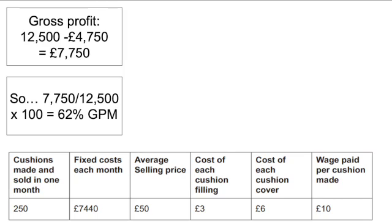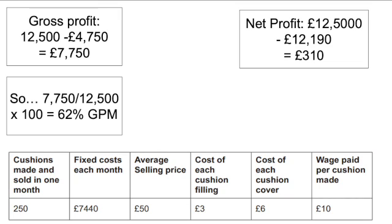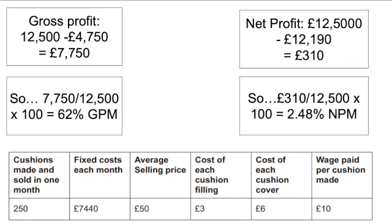With a gross profit of £7,750 divided by £12,500 times 100, we get a 62% gross profit margin. Is that good? Well, that depends — what's the market average, and what was your gross profit margin last month? You'd need a point of comparison. For net profit, we already know it's £310. So £310 divided by £12,500 times 100 gives us 2.48%. You'd always expect the net profit margin to be lower than the gross profit margin because it takes into account more costs, but there is a very big difference between the two.